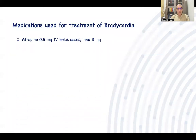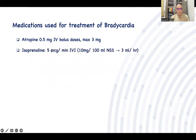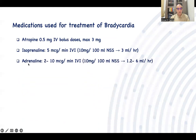Regarding drug doses in bradycardia: atropine 0.5 mg IV bolus, maximum 3 mg. Isoprenaline 5 mcg/min IV infusion — if one ampoule is 10 mg, put it in 100 mL normal saline and start at 3 mL/hour. For adrenaline, 2–10 mcg/min IV infusion — use 10 ampoules of adrenaline (10 mg each) in 100 mL normal saline and give 1–2 mL/hour up to 6 mL/hour.